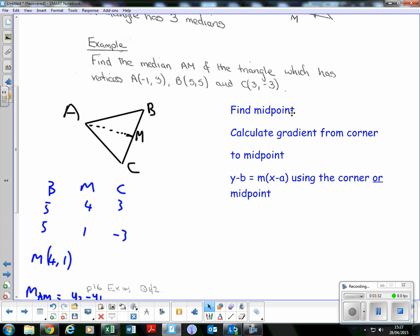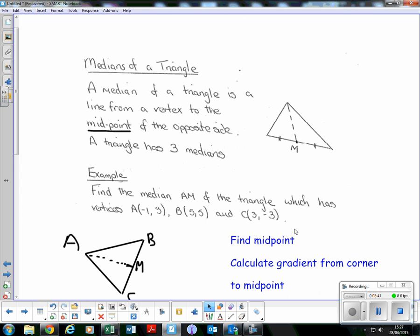So: find the midpoint of the opposite side, calculate the gradient from the corner to the midpoint, and substitute into y - b = m(x - a). It's very important that you understand and know how to find the equation of a median, a perpendicular bisector, and an altitude. This is asked in almost every single exam—in fact, I can't think of one where it hasn't been asked.